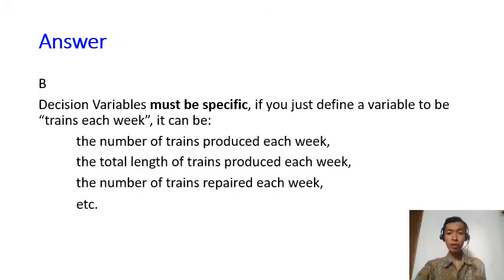The answer is your decision variables must be specific. If you just define a variable to be trains each week, it can be the number of trains, the total length of trains, how many meters, how many kilometers. It can be the number of trains repaired each week, so you must be very specific: the number of trains produced each week.